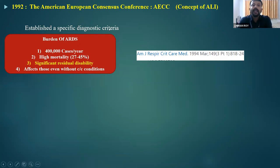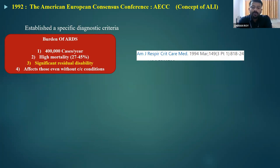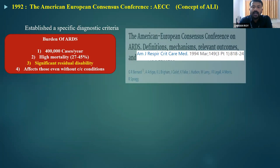After that, they termed the condition as acute respiratory distress syndrome. In 1992, another consensus came — the American-European Consensus Conference (AECC). They introduced the concept of acute lung injury (ALI) and also ARDS, establishing specific diagnostic criteria. This article was published in the American Journal of Critical Care Medicine in 1994.